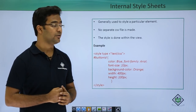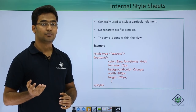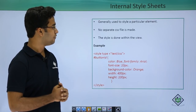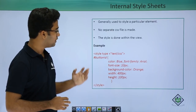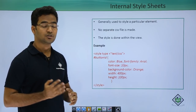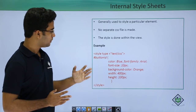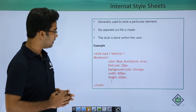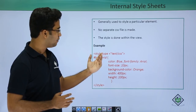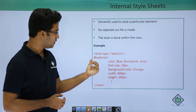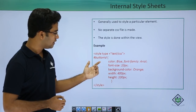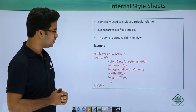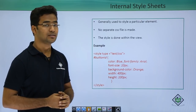Now, the internal style sheet. Here we won't be creating any external style sheet. It is generally used to style a particular element, and the styling is done within the view itself. For example, if we are using an index.html page or a view, we create a button and based on the reference of that button's ID we write a style tag with type text/CSS, then specify its color, font size, background, width, and height, and close the style tag. This was an example of how to use internal style sheets.